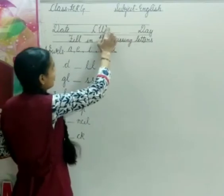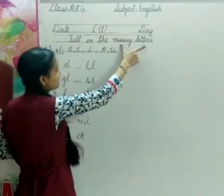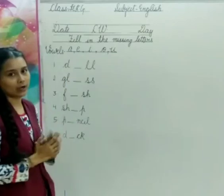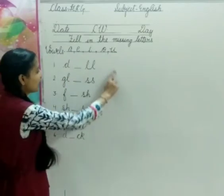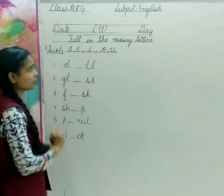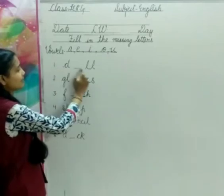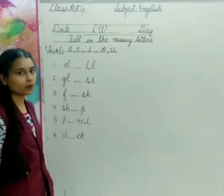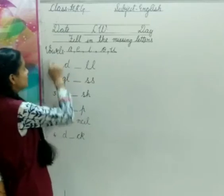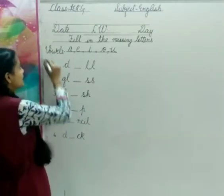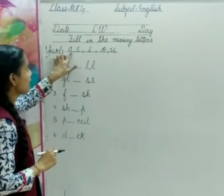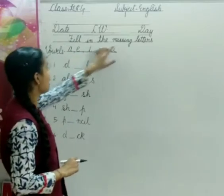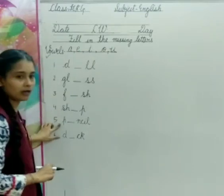Let's start. Day, second line, the topic is fill in the missing letters. Now we are going to fill the spellings here and complete the spellings. These are all incomplete spellings. Let's fill them. The spellings are given to you. The dashes are in dashes. These spellings are complete with the help of vowels. We learned vowels in the last class. Vowels are five, that is A, E, I, O, and U. With the help of these vowels, we fill the spellings and complete our spellings.